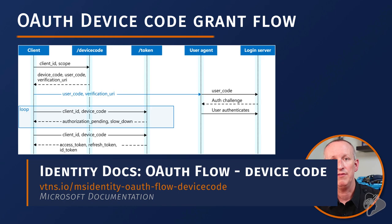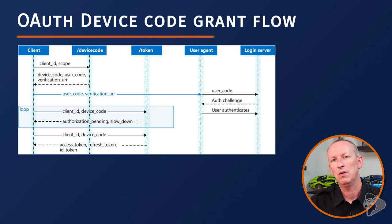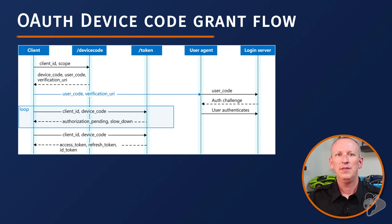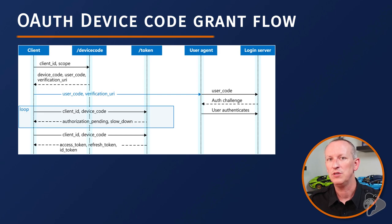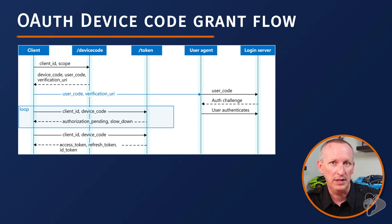The device code grant flow enables an application to support a multi-device sign-in process for applications running on input-constrained devices like smart TVs, printers, or IoT devices. The device provides a URL and a code for the user to open on their phone, tablet, or another device. While the user goes through the authentication process on the other device, the application polls the token endpoint for the necessary tokens. Once the user completes sign-in, the original application receives the access token, the refresh token, and the ID token.